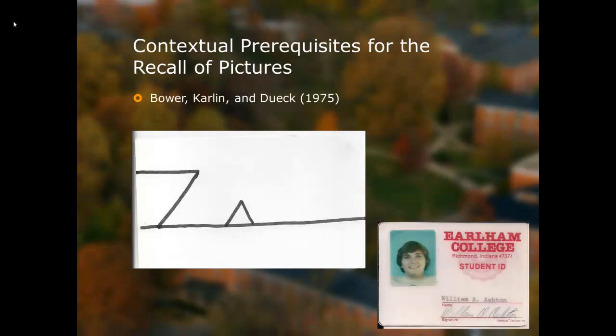The title of the study was Contextual Prerequisites for the Recall of Pictures, and it was based on the work of Bower, Carlin, and Duak from 1975. Bower's article was about Drudels — you can see one of the famous Drudels there. This Drudel is described as a ship arriving too late to save a drowning witch, and now you kind of understand what Drudels are about.